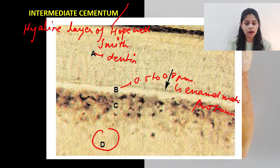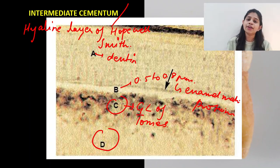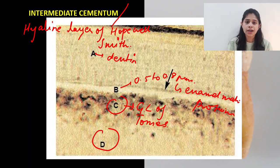One more layer seen beneath the hyaline layer is the granular layer of Tomes. This layer is made up of collagenous and non-collagenous proteins and forms a layer of hypomineralized areas, which is the reason it gives rise to a granular appearance.